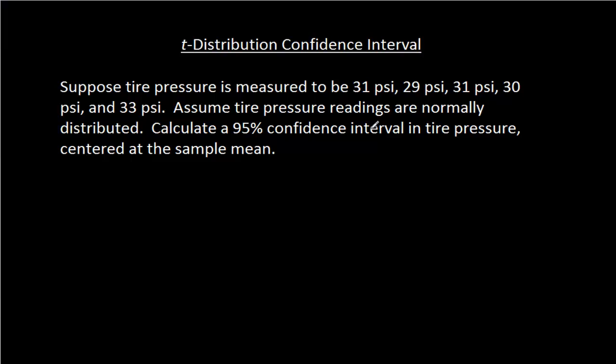So it really puts you at a loss for what the tire pressure actually is. Because if you use one gauge maybe it's 33 and another gauge it's 35. So what I've done here is I've said we've made five measurements of tire pressure: 31, 29, 31, 30, and 33. And we're going to get a 95% confidence interval for that tire pressure based on those five measurements. We're going to assume that the readings of the tire pressure are normally distributed and independent and identically distributed to get this confidence interval.